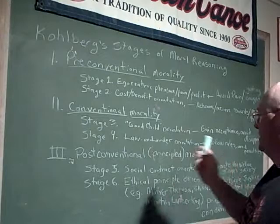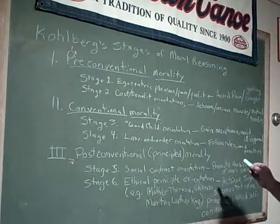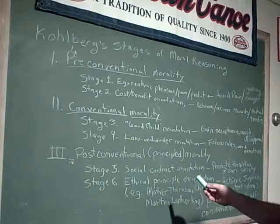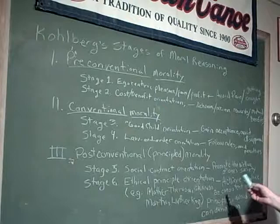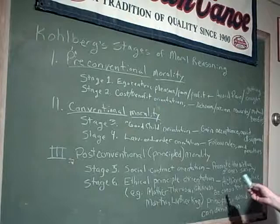Post-conventional morality, stage 5: social contract orientation — promote the welfare of one's society. Stage 6: ethical principle orientation — achieve justice, be consistent with one's principles, avoid self-condemnation.